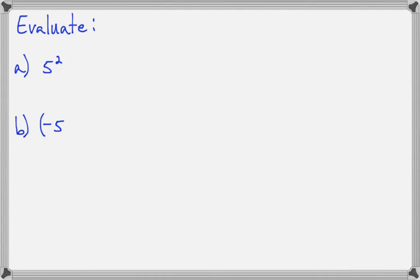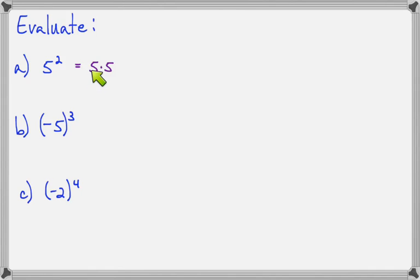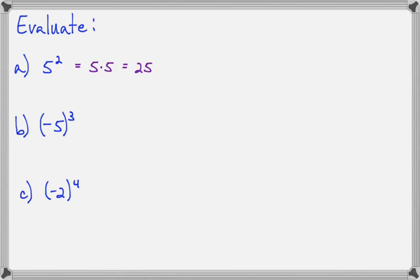Now we're going to practice evaluating some different values. Here I've got 5 squared, so that's going to become 5 times 5, which is 25. So if they ask you to write it in multiplication form, this is it, and then if they say simplify, you're going to go all the way to 25 in your homework.